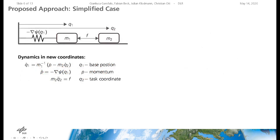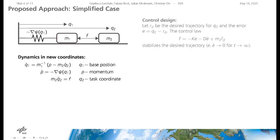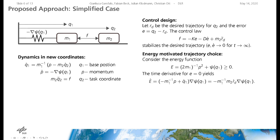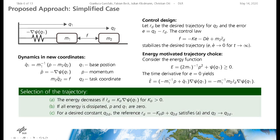Having obtained the dynamics in new coordinates, a controller for the second mass is designed. For a given trajectory R desired, the tracking error E is controlled to be zero using a proportional derivative controller with acceleration feedforward. The trajectory design is motivated by the energy function E consisting of the kinetic and potential energy. This function is positive semi-definite and for zero tracking error the time derivative is linear in the reference velocity. The energy decreases if the reference velocity has the same sign as the force of the spring. If all energy is dissipated, the momentum is zero and the base is at rest.